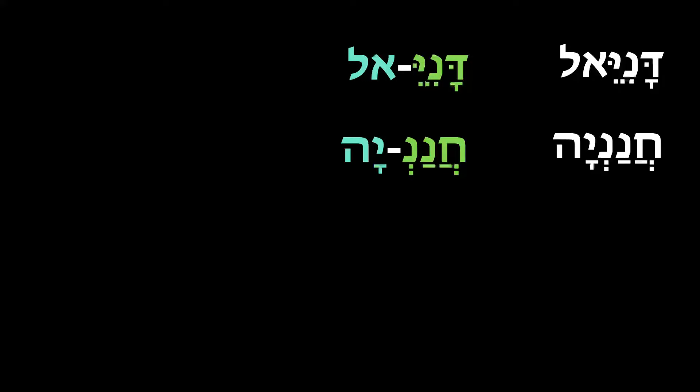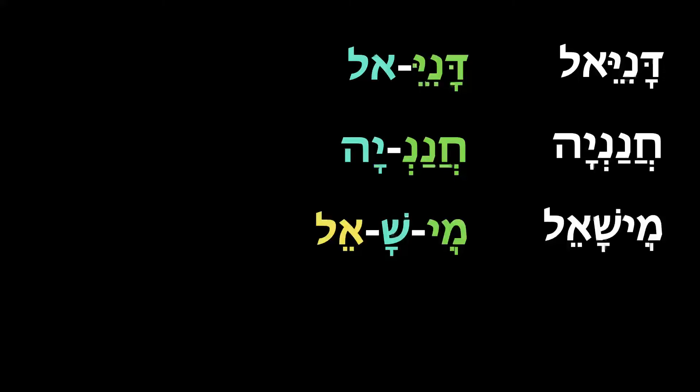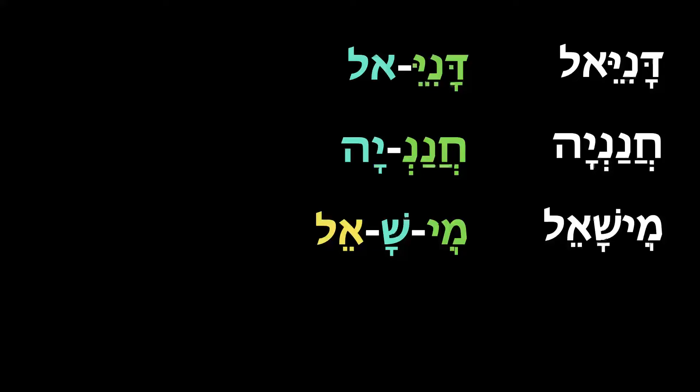Chananya is Chanan-Ya — the Lord is Merciful. Mishael is Mi-Sha-El — Who is this God? Or perhaps it could be read as Who is As God?